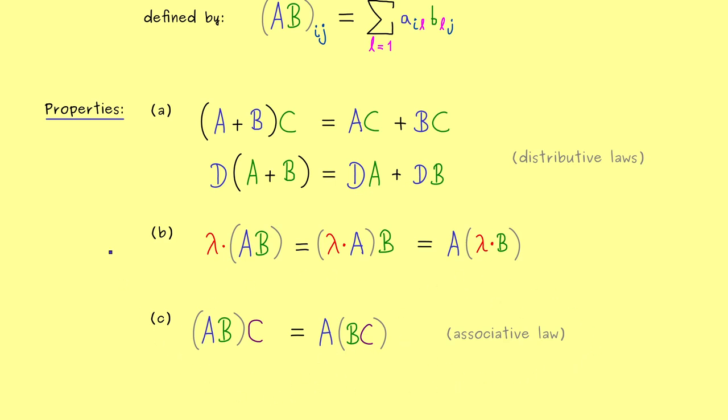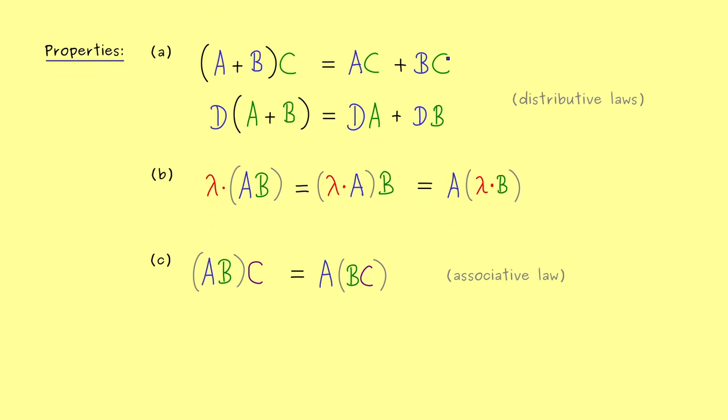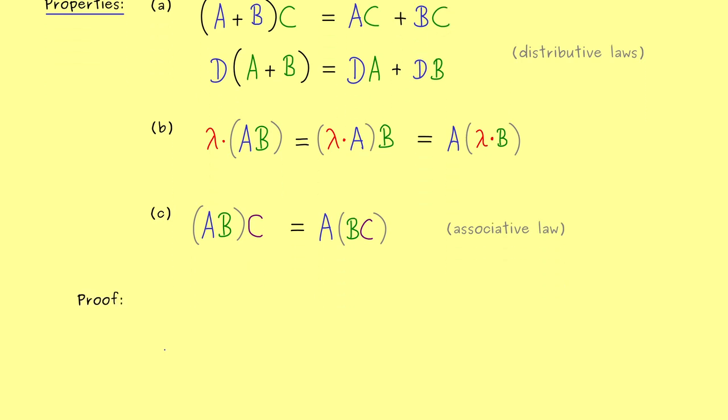It turns out all these properties are easy to prove when you use this sum rule for the definition of the matrix product. Because then we just deal with real numbers and we know a lot of rules for real numbers. Therefore, in the proof you just need to apply these rules. I think it's sufficient to understand the whole idea if I just show you one part of it. Let's prove the associative law.